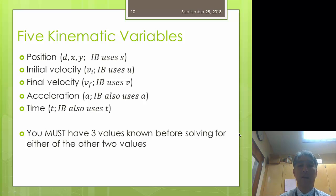To focus in on the five kinematic variables, we have position, initial velocity, final velocity, acceleration, and time. Out of these five, you must have three of them. Before I can solve using any of these equations, I must know three of these values before I can solve for either of the other two.